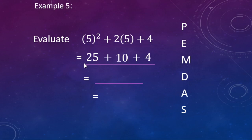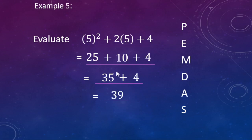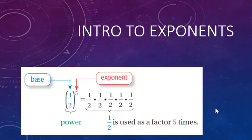Now for addition, going left to right: 25 plus 10 is 35, and then 35 plus 4 is 39. You can break it into two steps or do it in your head: 25 plus 10 is 35, plus four more is 39. You don't have to write it out as a separate step.